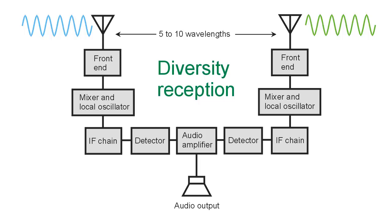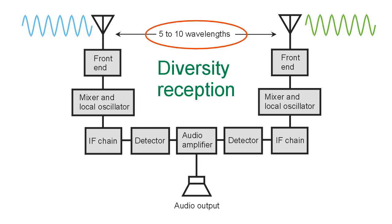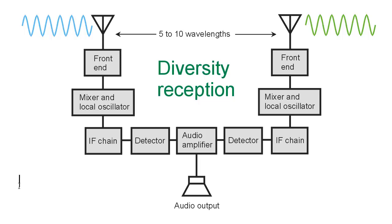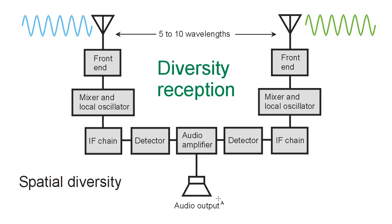They supplement each other to form a more robust signal than you could get with just one receiver. The key is that this distance needs to be significant — at least five to ten wavelengths, and more if possible. Now there is another form of diversity reception besides this spatial diversity reception — you can also use frequency diversity.